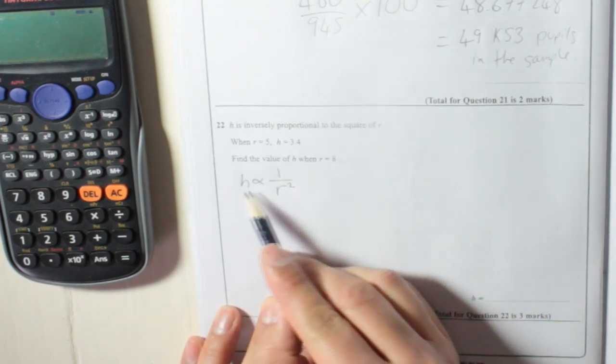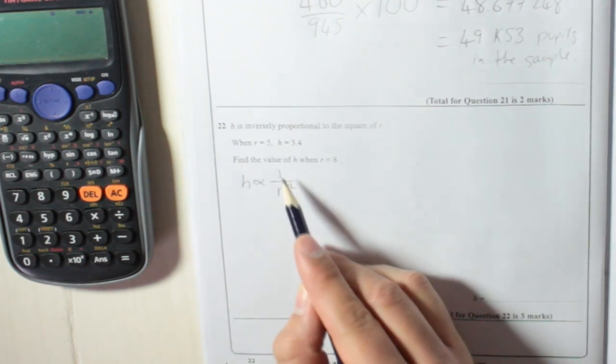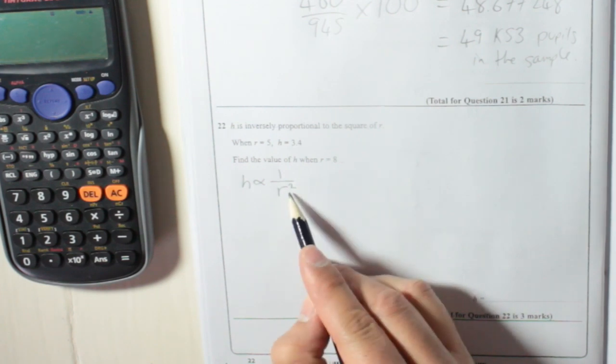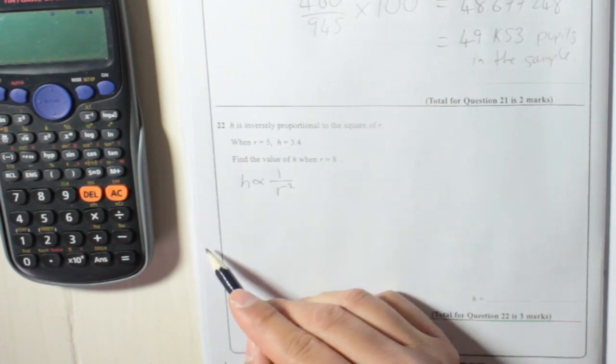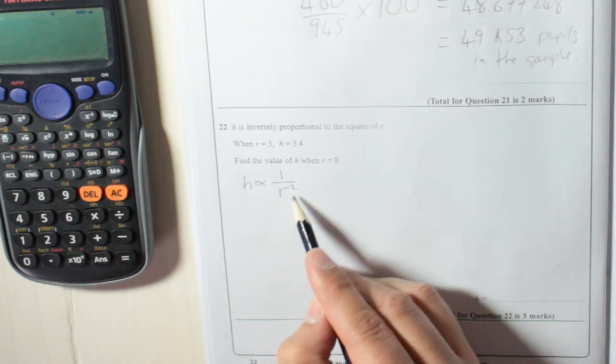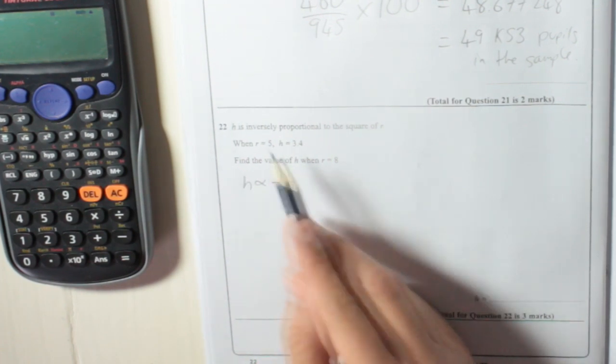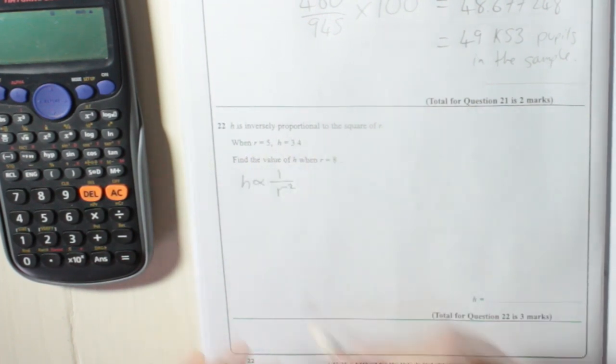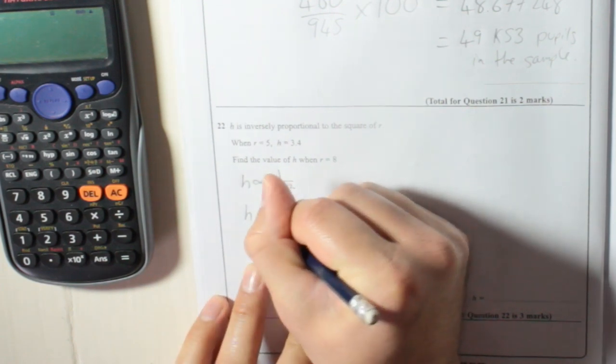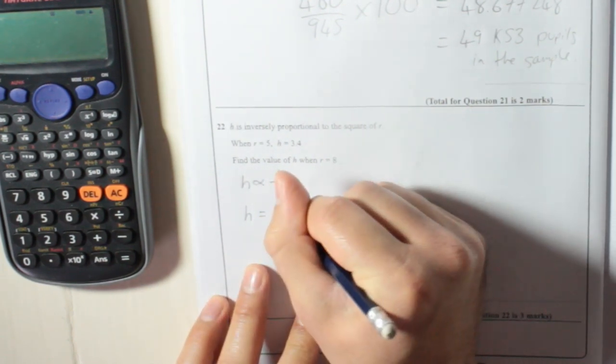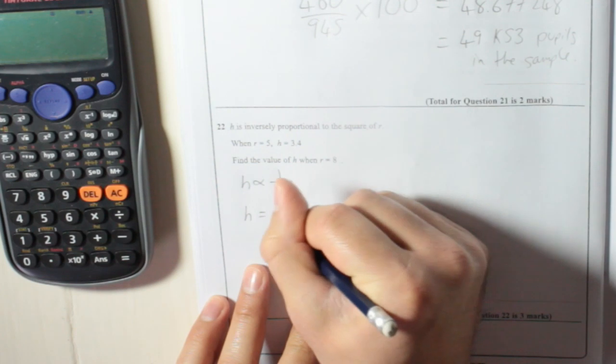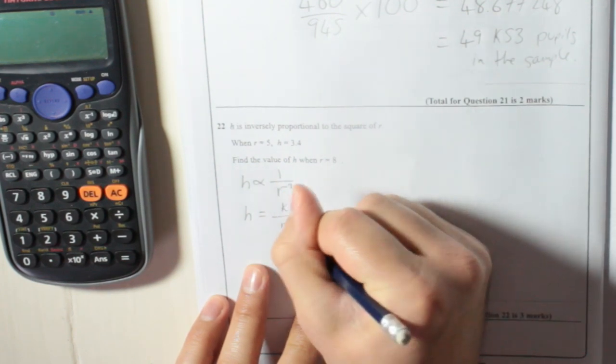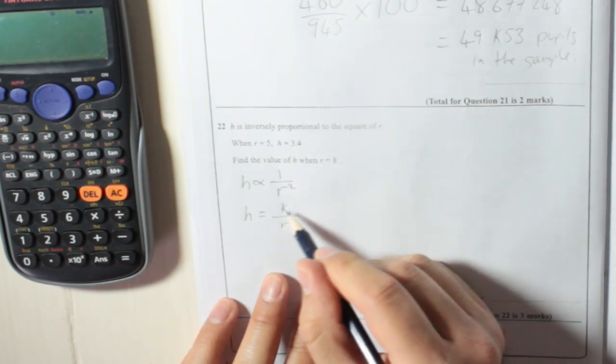So because h is inversely proportional to r squared, that means as r squared gets bigger, h goes down. Or as r squared gets smaller, h goes up, because it's inversely proportional. So you write that h is equal to k over r squared. And we will need to work out what k is.